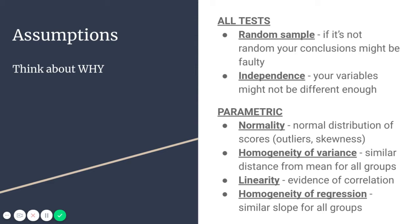Linearity is evidence of correlation, and for regression or predictive tests you would need this as well as analysis of variance. You have to establish that your variables have something to do with each other, or your tests won't be significant. Homogeneity of regression means there's a similar slope of a distribution of scores for all different groups — if one group has a variable inversely correlated to another and the other group has the opposite, with one slope going down and one going up, you can't make an accurate comparison without accounting for that.